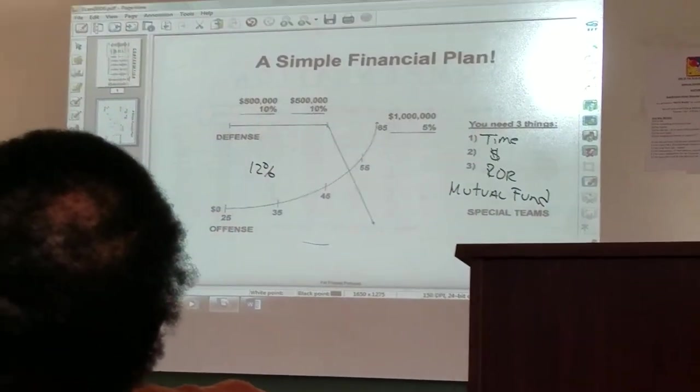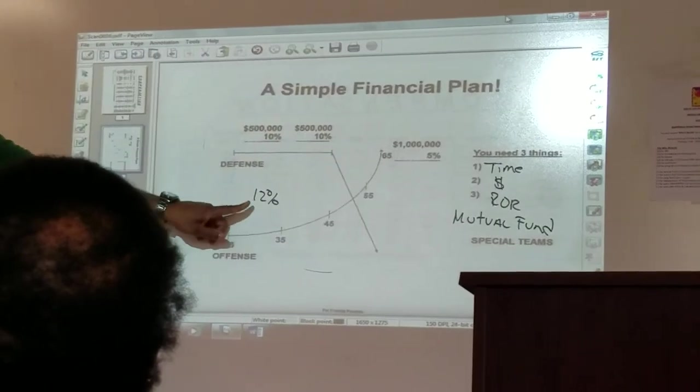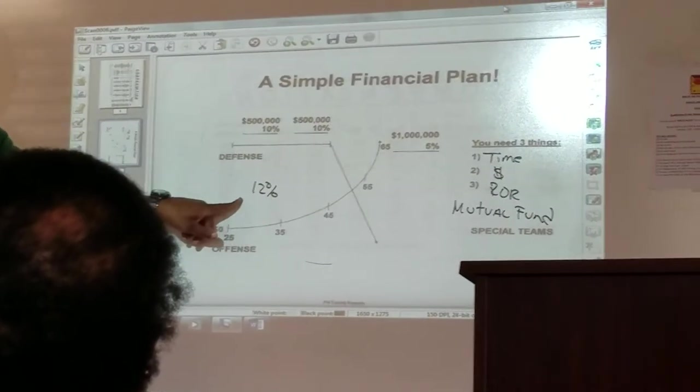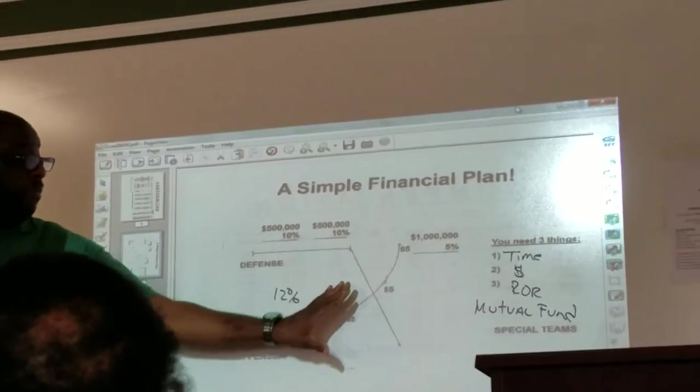You need three things to build your offense: time, money, and a rate of return. All make up a mutual fund, what Jeff just talked about. This is a short version of mutual funds.